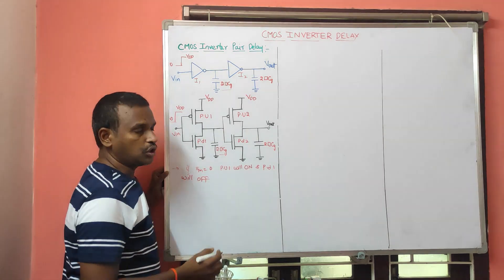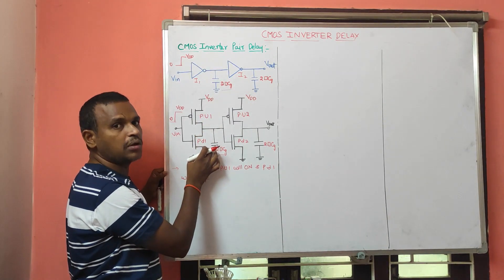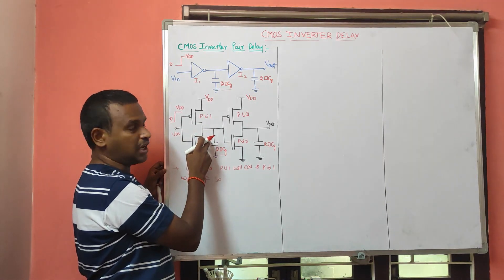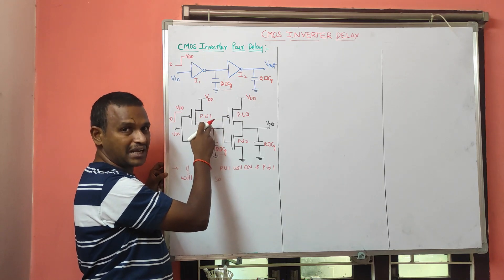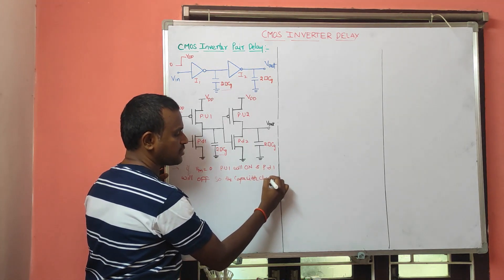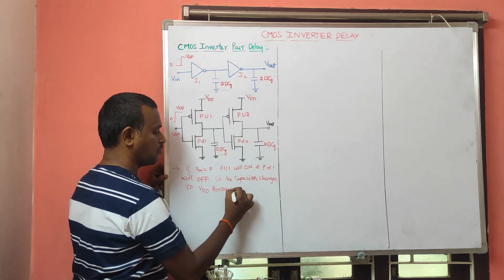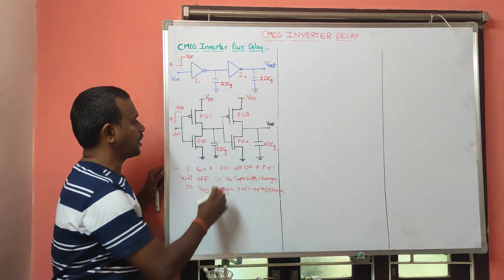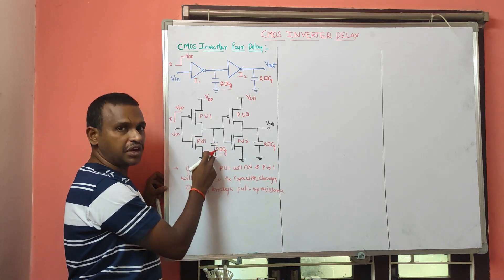If VIN equals 0, the PMOS pull-up 1 will be in the ON condition and the pull-down transistor will go into the OFF condition. Since pull-down is OFF, the 2·CZ capacitor will charge through the pull-up transistor. The capacitor charges to VDD through the pull-up resistance.